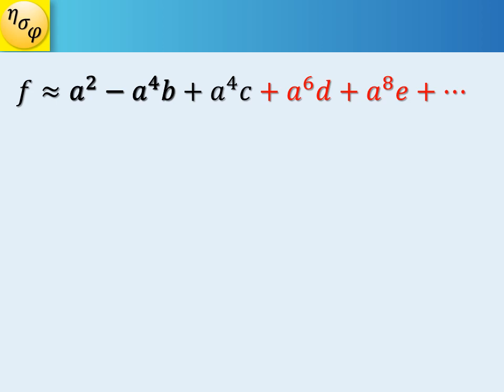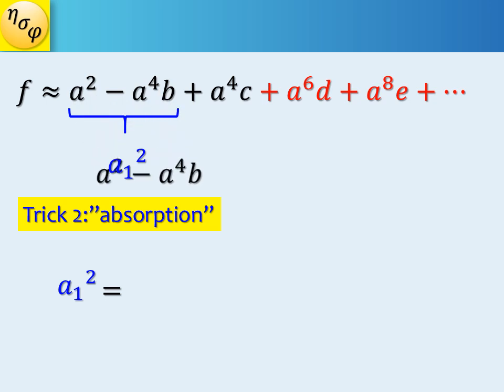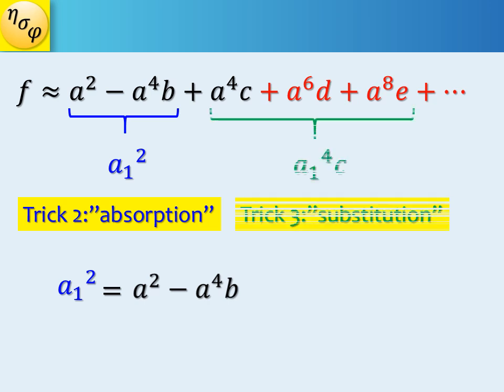The second trick is we introduce a new finite number to absorb b in the equation. Let us call it a1 squared. Then a1 squared equals a squared minus a to the fourth times b.